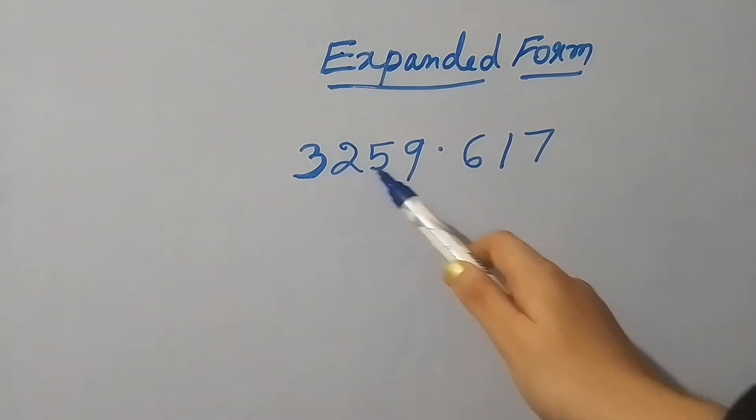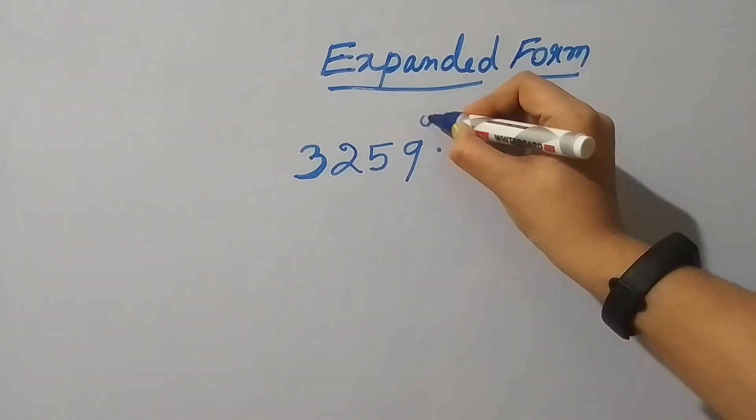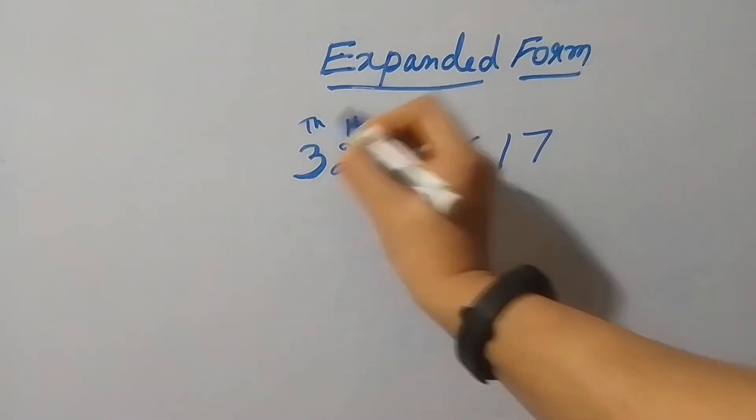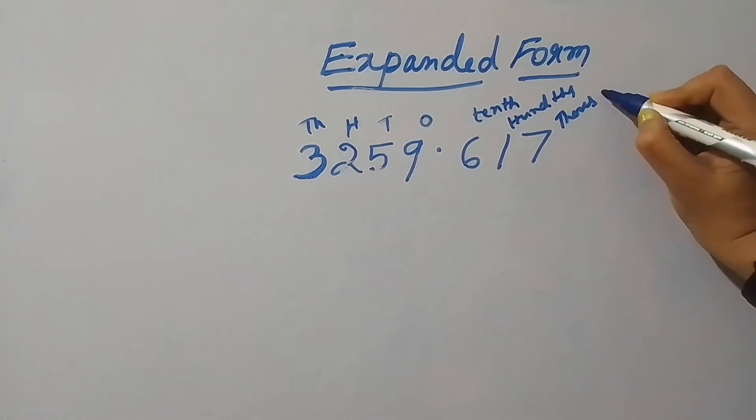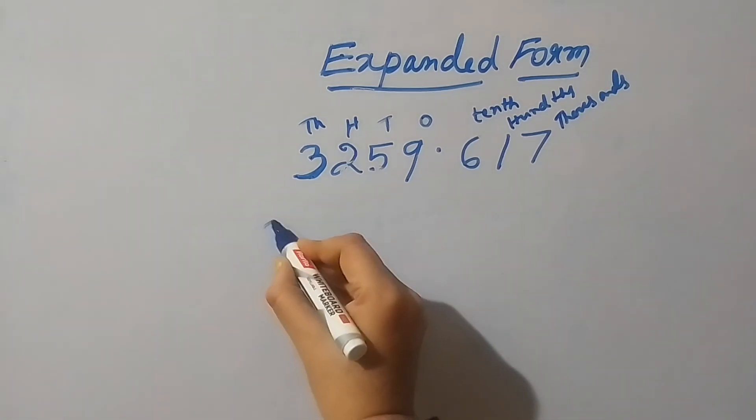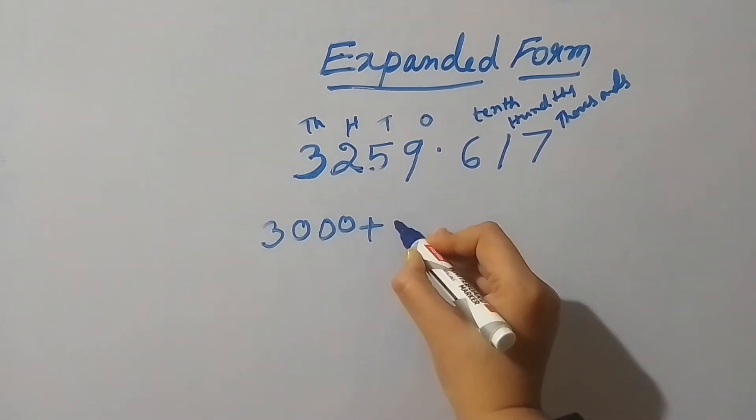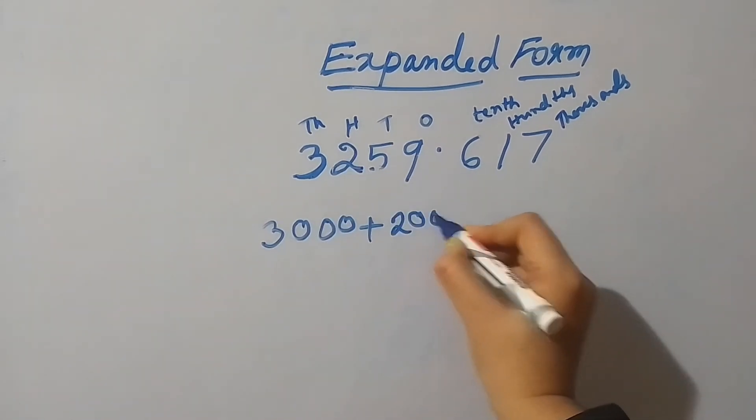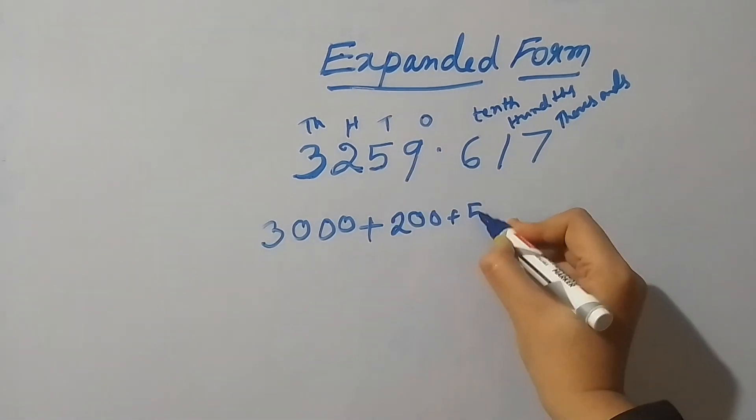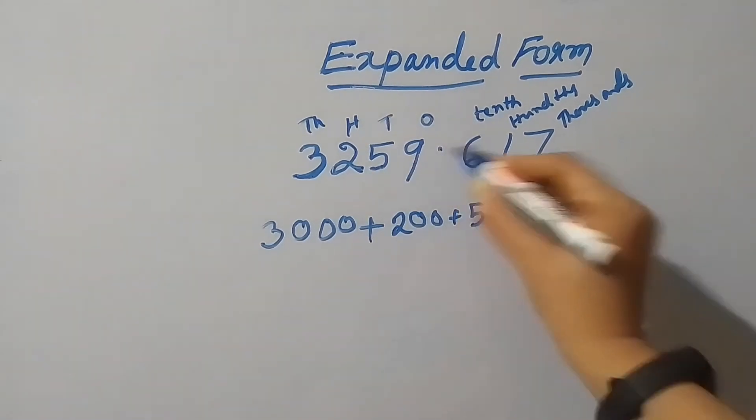Now I am going to explain how to write the expanded form of a large decimal number. See, I am writing the place value names at the top part of the number: ones, tens, hundreds, thousands, and the decimal part: tenths, hundredths, thousandths. According to those place value names, let's see how I am writing the expanded form.